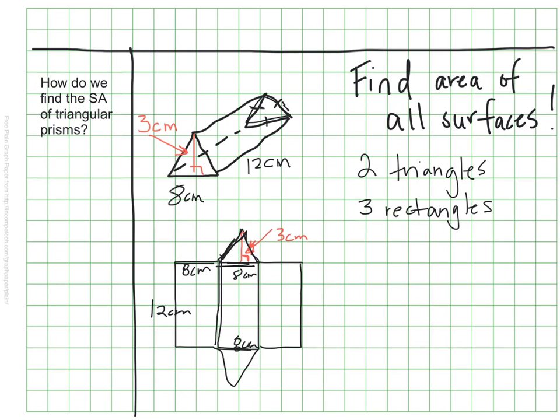So I have 8 by 12 rectangles, I have another 8 by 12 rectangle, a third 8 by 12 rectangle, and I have a triangle here that is 8 along the bottom, and my height here is 3. Sorry, that got a little messy here, but that's where all my numbers are coming from. So now I just need to find the surface area of each piece.